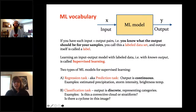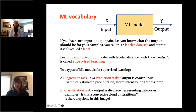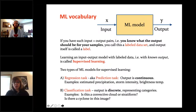There are two types of machine learning models for supervised learning. There are regression tasks, where the output is continuous — examples are estimated precipitation, storm intensity, brightness temperature — anything with a continuous value.